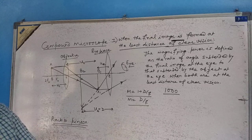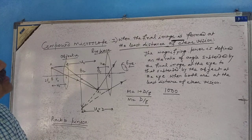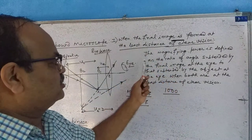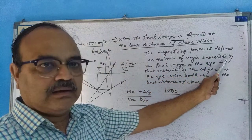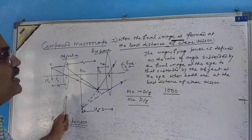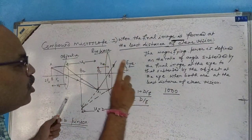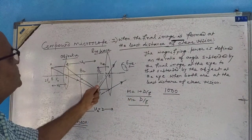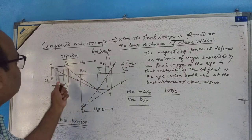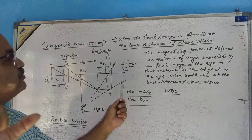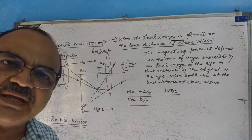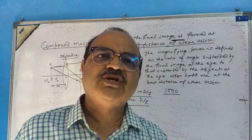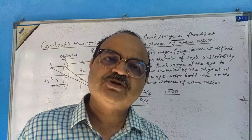Now we want to find out the magnifying power of this device. The magnifying power is defined as the ratio of the angle subtended by the final image at the eye to the angle subtended by the object at the eye — when both are at the least distance of clear vision. This definition is very much identical with the one we used in case of the simple microscope.